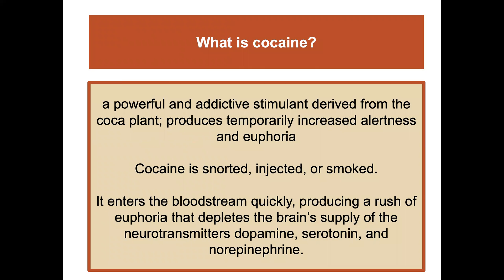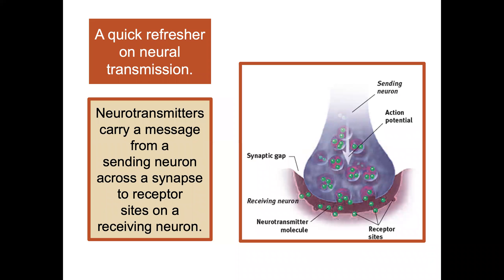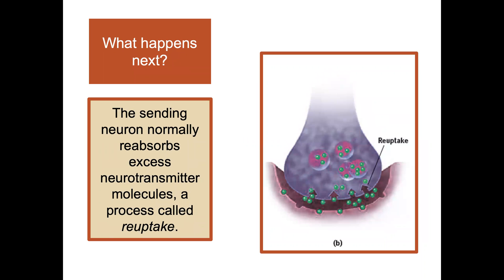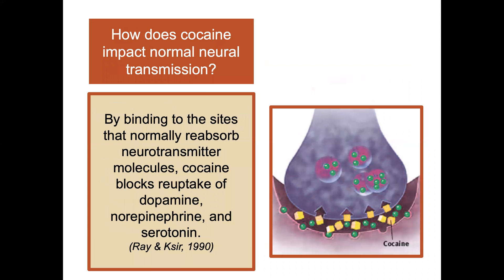Cocaine is a powerful and addictive stimulant derived from the coca plant that produces temporarily increased alertness and euphoria. It is snorted, injected, or smoked. It enters the bloodstream quickly, producing a rush of euphoria that depletes the brain's supply of neurotransmitters: dopamine, serotonin, and norepinephrine. Neurotransmitters carry a message from a sending neuron across a synapse to receptor sites on a receiving neuron, and the sending neuron normally reabsorbs excess neurotransmitter molecules in a process called reuptake.